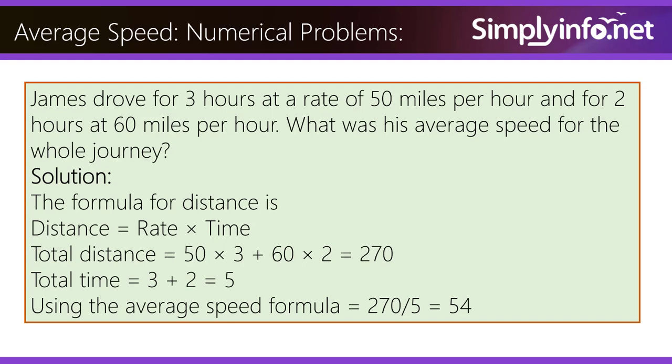The solution: the formula for distance is distance equals rate times time. Total distance equals 50 times 3 plus 60 times 2 equals 270. Total time is 3 plus 2 equals 5. Using the average speed formula, 270 divided by 5 equals 54.